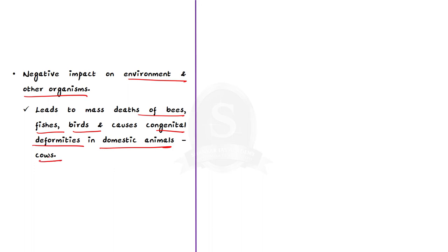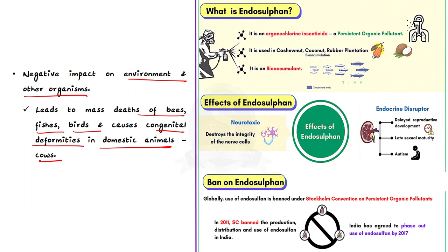The Brundtland Report of 1987 defined sustainable development as the idea that human societies must live and meet their needs without compromising the ability of future generations to meet their own needs. Eliminating the use of harmful chemicals like Endosulfan is also an important component of sustainable development. Let us make an effort to conserve our nature to protect our future generations. To know more about environment-related news and issues, follow Shankara IAS Academy's YouTube channel. Thank you.